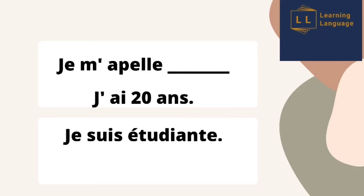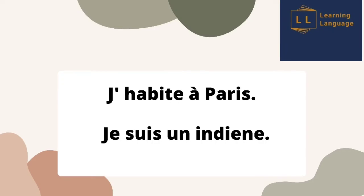The third statement is 'je suis étudiant(e)', which means 'I am a student'. The fourth statement, 'j'habite à Paris', means 'I live in Paris'. These describe your occupation and where you live. 'Je suis' means 'I am', and at the end you add your nationality — for example, 'je suis indien(ne)' means 'I am an Indian'.